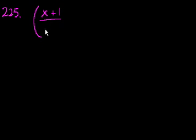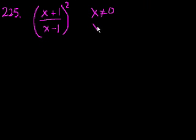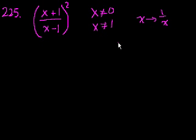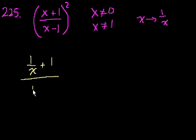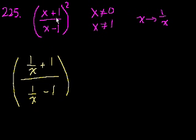Problem 225. They write x plus 1 over x minus 1, all squared. If x does not equal 0 and x does not equal 1 — that's good because if x equals 1 we'd be dividing by 0 — and x is replaced by 1 over x everywhere in the expression, the resulting expression is equivalent to... let's just do it. We get 1 over x plus 1, over 1 over x minus 1, quantity squared.